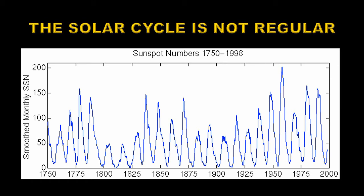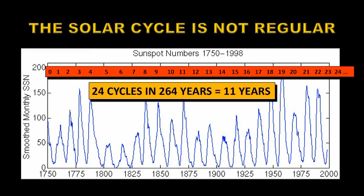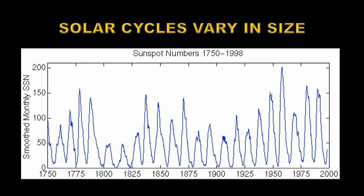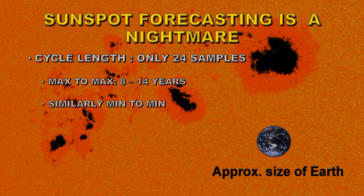You can see from that curve that the maximum of solar cycle 24 was in about April of 2014. We can see that the sunspot cycle is not regular. Since 1750 we've had 24 solar cycles in a period of 264 years, which amounts to approximately an average of 11 years per cycle. However, the longest cycle was about 14 years and the shortest has been about 8 years. The amplitudes also vary considerably — from less than 50 to over 200 across the 24 cycles seen so far.